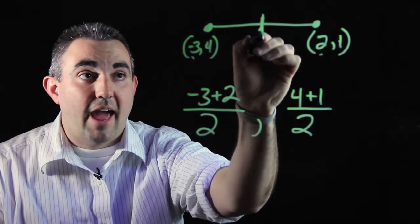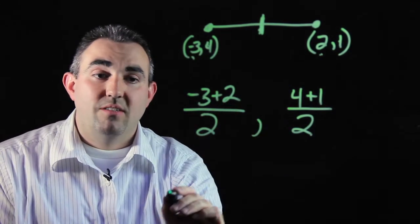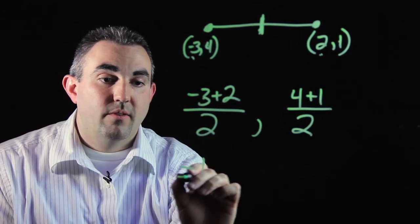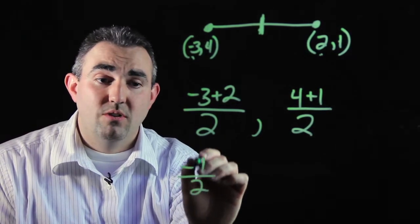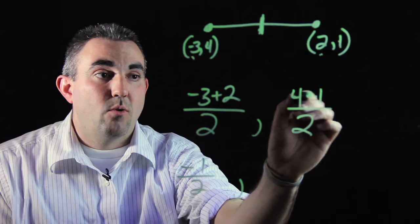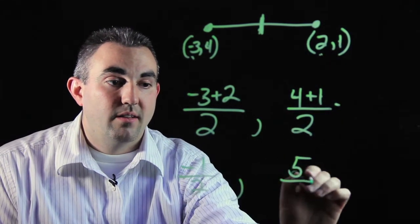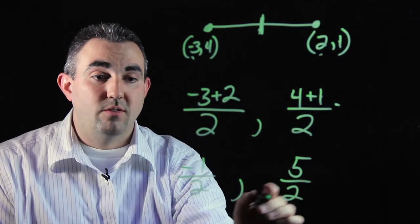That will get you to the halfway point right here. So negative 3 plus 2 is negative 1, divided by 2 gives you negative 1 half. 4 plus 1 gives you 5, divided by 2, gives you 5 over 2.